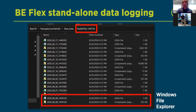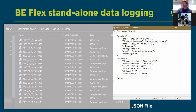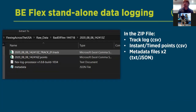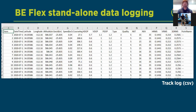Opening the JSON file shows metadata fields. Inside the ZIP you'll find a track log, instant points, time points, and metadata files. The CSV files from track logs or instant point collections are easily ingestible into photogrammetry software, CAD, or GIS software. They also include quality fields like HDOP, VDOP, PDOP, and fix type, so you can feel confident about the data you're collecting.